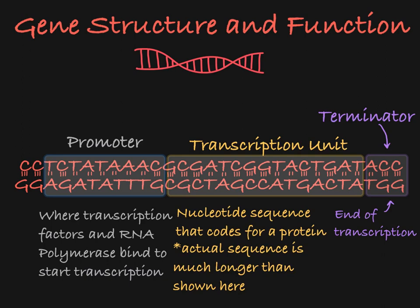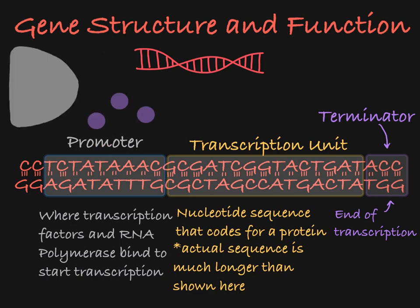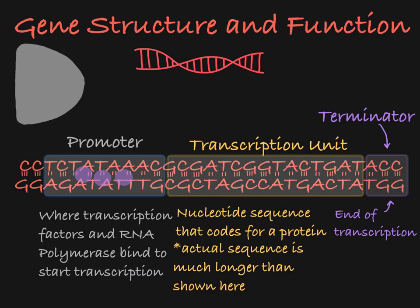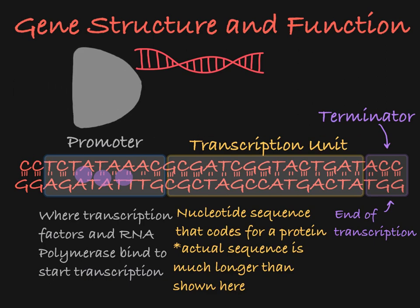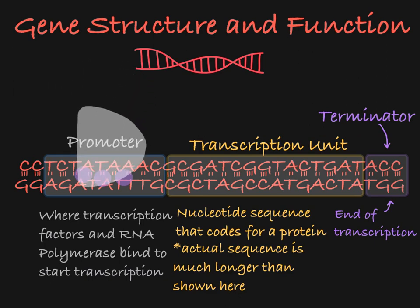The promoter region of the gene usually contains a sequence called the TATA box, which contains a nucleotide sequence TATAA. This TATA box in the promoter is where some of the transcription factor proteins will bind to the DNA. Once the transcription factors have bound to the TATA box, they will recruit RNA polymerase to the promoter of the gene, preparing that gene for transcription.